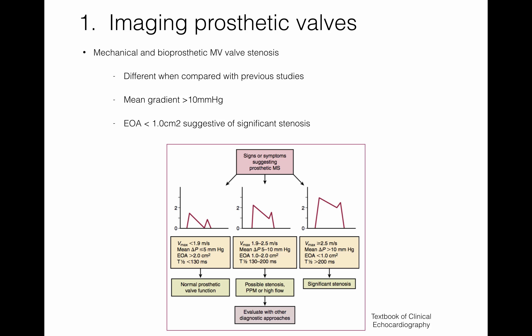Assessment of stenosis for both types of prosthetic mitral valve — mechanical and bioprosthetic — is also very similar. Indications of prosthetic mitral valve stenosis include a significantly increased gradient compared with previous studies, a mean gradient greater than 10 mmHg, and an effective orifice area less than 1 cm², which is very highly suggestive of significant prosthetic mitral valve stenosis.